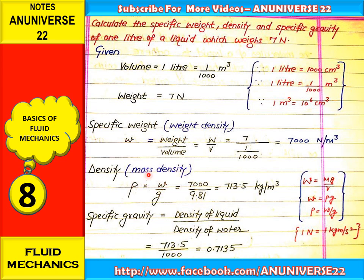The second parameter is density, also called mass density. It is denoted by rho and is equal to specific weight upon g. This is because specific weight equals rho times g, since weight equals mg divided by volume, and m upon v is rho. So the formula for rho is w upon g. Substituting the calculated specific weight divided by 9.81, density comes out to 713.5 kg per meter cube.